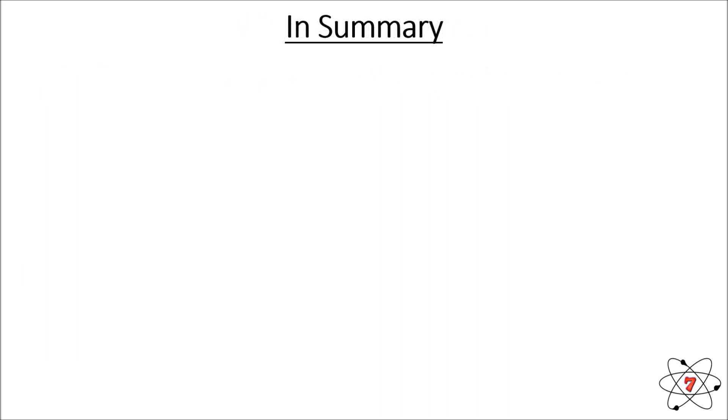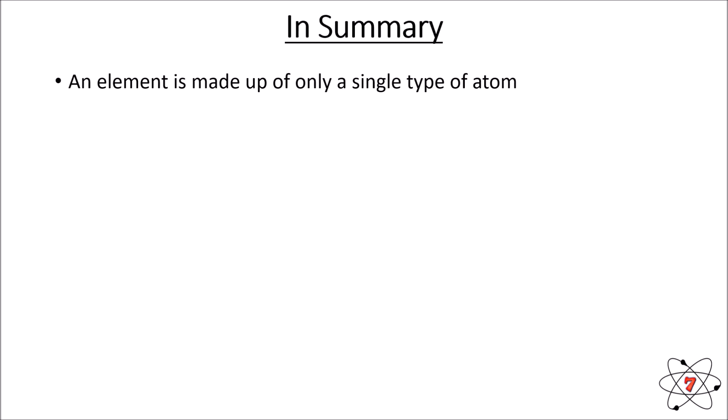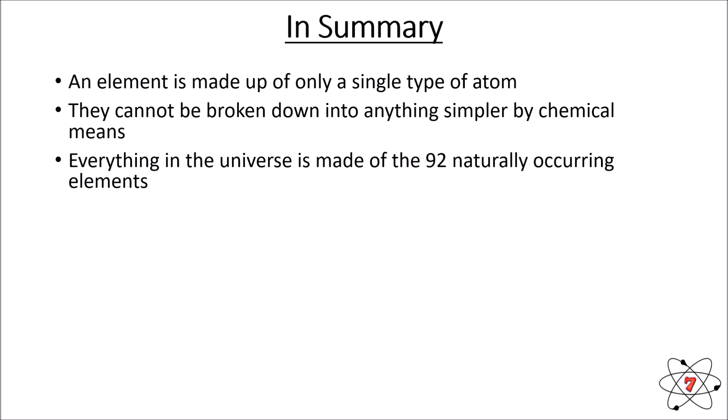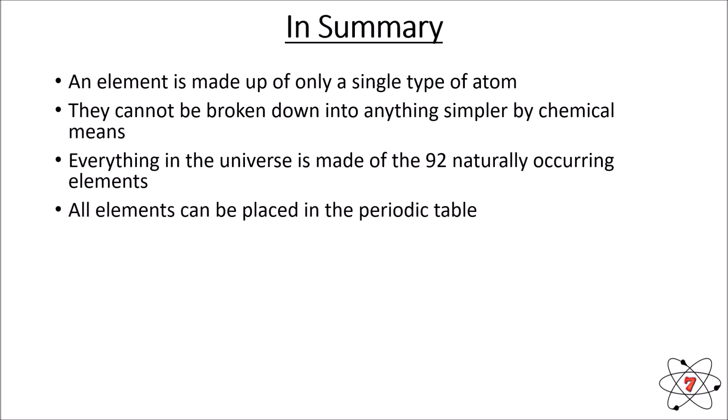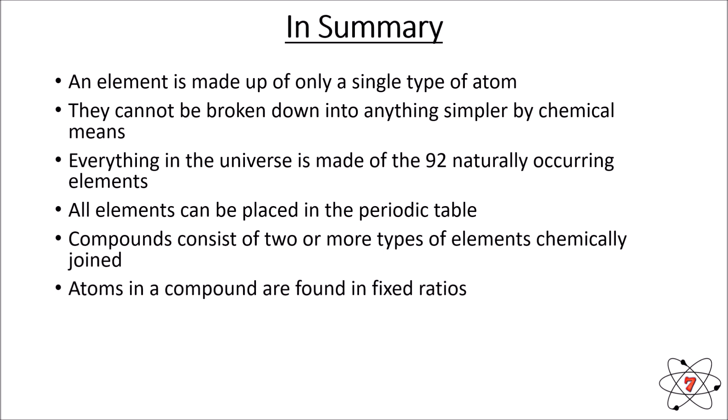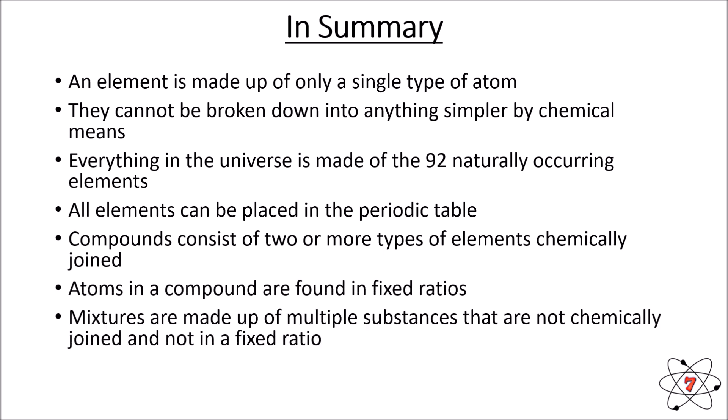In summary: an element is made up of only a single type of atom and cannot be broken down into anything simpler by chemical means. Everything in the universe is made up of 92 naturally occurring elements, all of which can be placed in the periodic table. Compounds consist of two or more types of elements chemically joined together with a fixed ratio of atoms. Mixtures are made up of multiple substances that are not chemically joined, not in a fixed ratio, and can be separated physically. I hope you understand the basics of elements, compounds and mixtures — until next lesson, keep on learning!